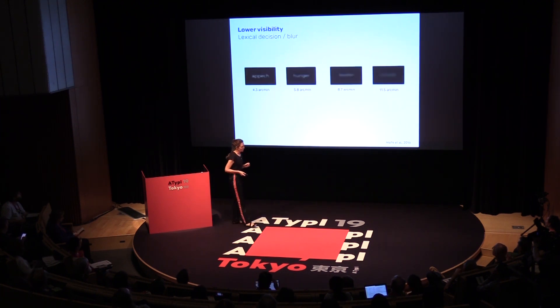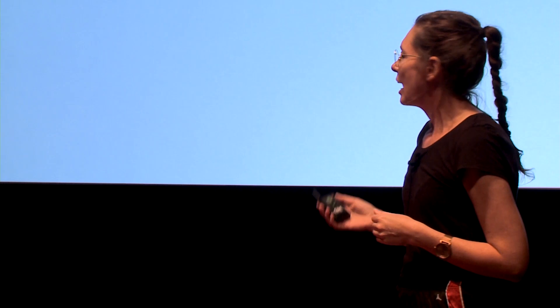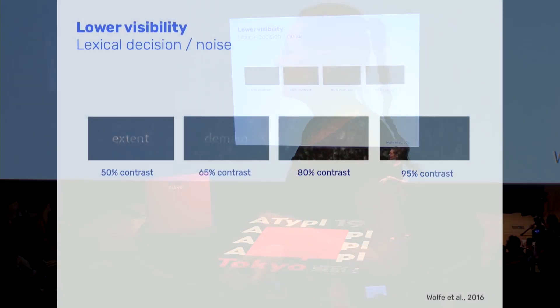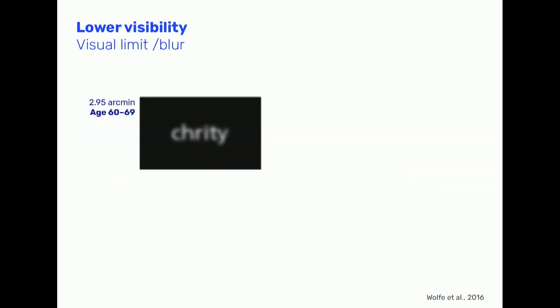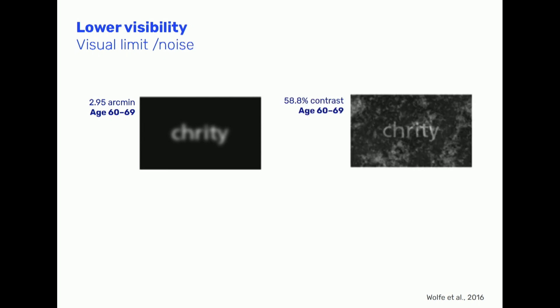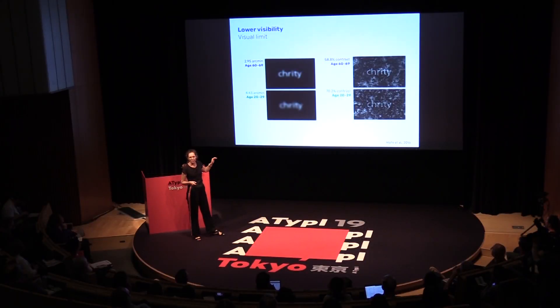This next experiment was carried out by Wolf and colleagues. They were interested in seeing how the perceptual system works in relation to visibility in different age groups. They tested blurred text and text with noise. What they found was that for the older group, this was the most blurred they could read to see the word, and this was the most noise needed. However, for the younger group, they needed much less detail to be able to see the words. Older readers need details to read.